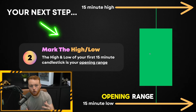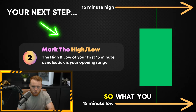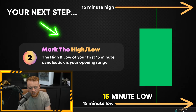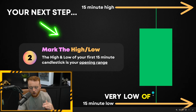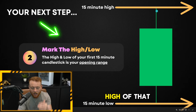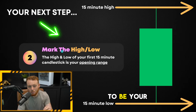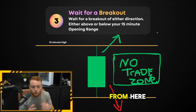Your next step is to identify your actual opening range off that first 15-minute candlestick. You want to mark your 15-minute high and your 15-minute low — and yes, you're going to use the wicks. So literally the very low and the very high of that 15-minute timeframe. Once you mark the high and low of that 15-minute candlestick, that is going to be your opening range.